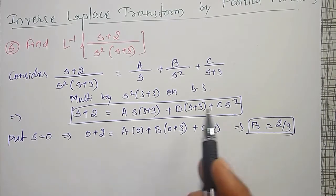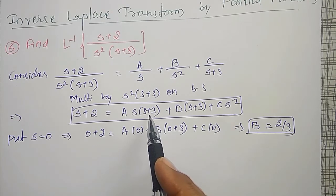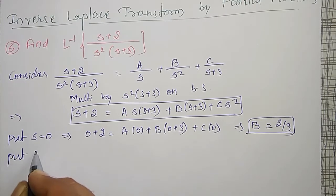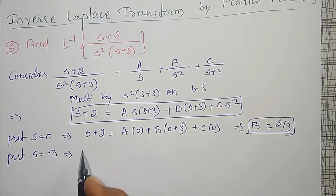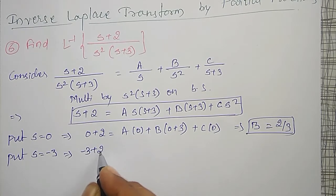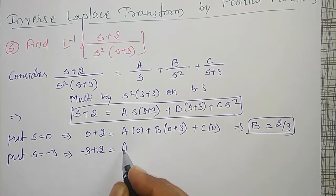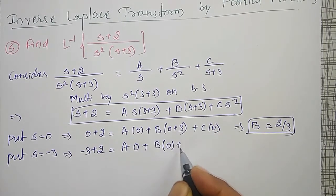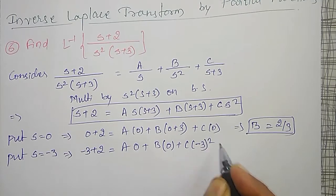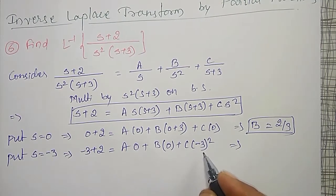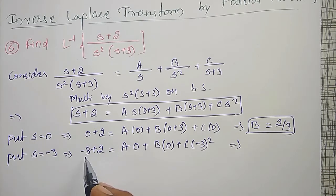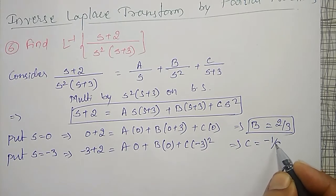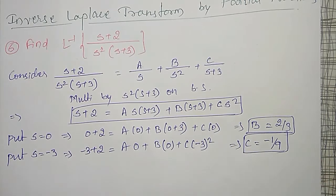Next, to find C, let me put s = −3 so that A and B terms become zero. Substituting s = −3: the left-hand side is −3+2 = −1. The right-hand side gives C·(−3)² = 9C. Therefore −1 = 9C, which gives C = −1/9.